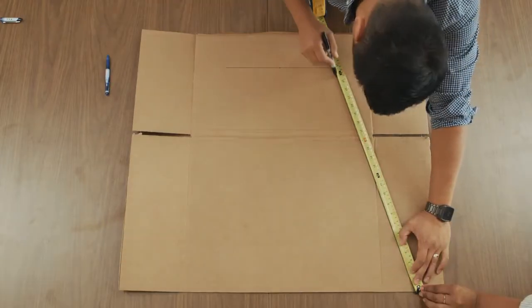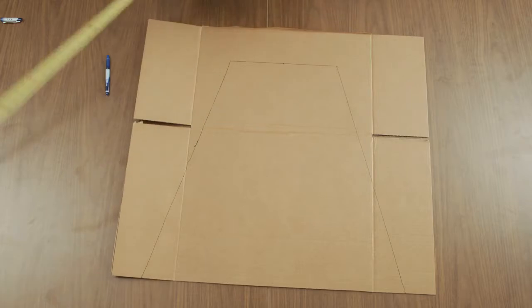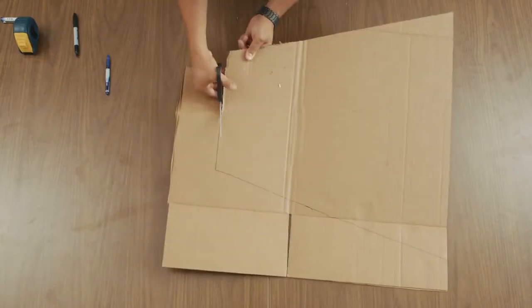Prepare the reflective panels. Draw the outlines of the reflector segments on your cardboard. Cut out the four cardboard segments.